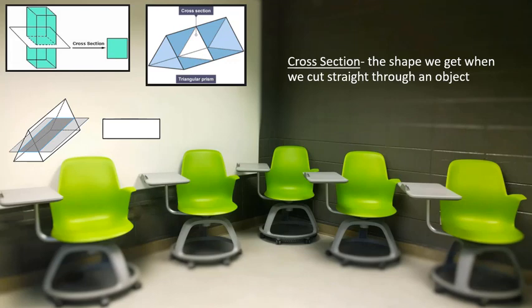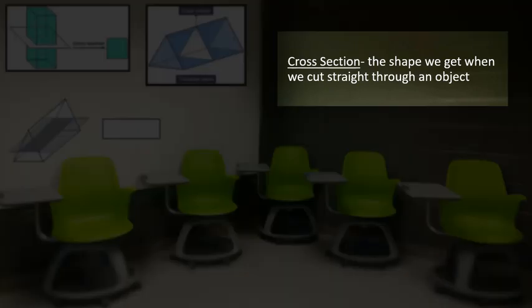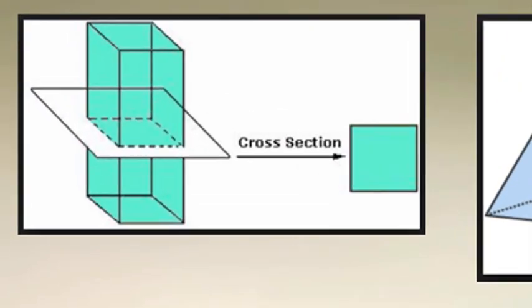So if we were to cut through a solid, the two-dimensional shape that's formed is the cross section. Here we have a rectangular prism. It's rectangular because it has two rectangular bases that are parallel.